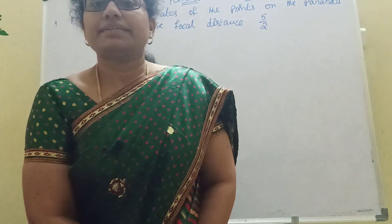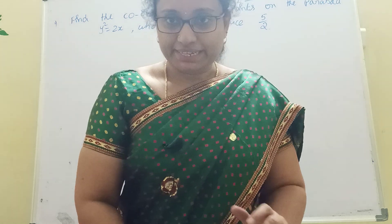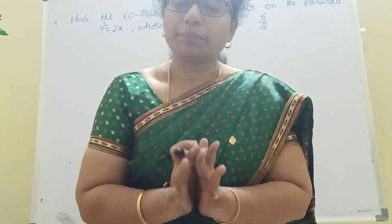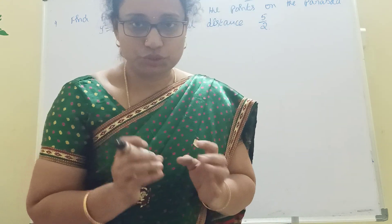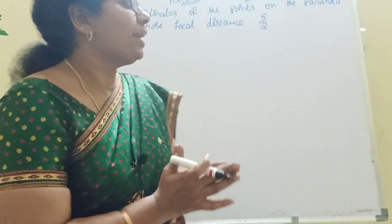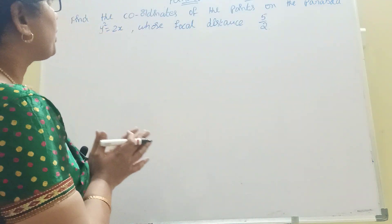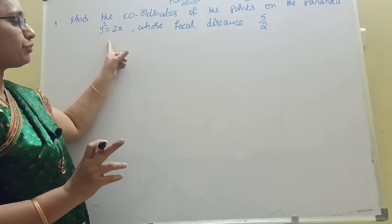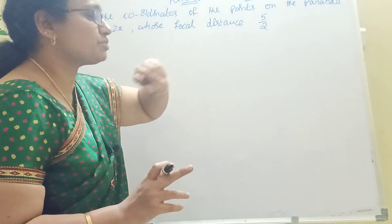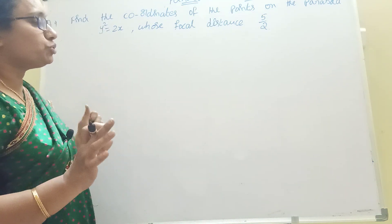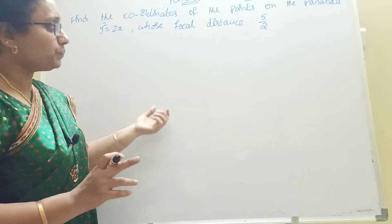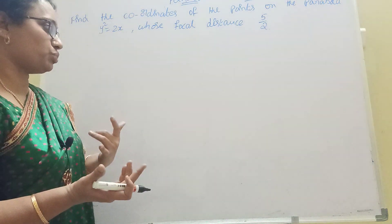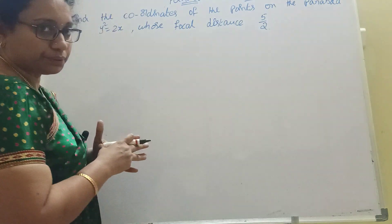Hi, welcome to my channel. Today's topic is parabola — this is my second topic on parabola. Parabola is already a 7-mark section; now you can do tips easily. This is a 2-mark problem: find the coordinates of the parabola y² = 2x whose focal distance is 5/2. The given points are 5/8 — let's work through this parabola.